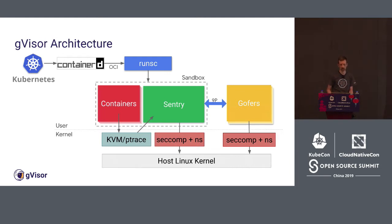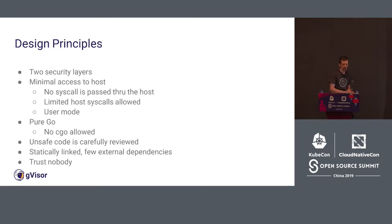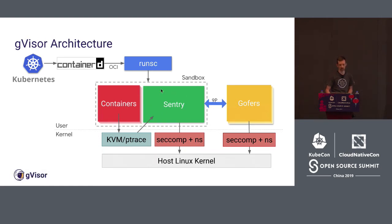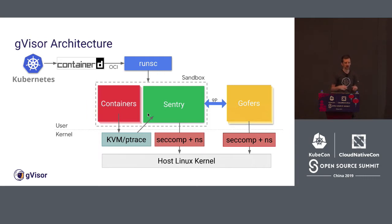Talking about some design principles behind GVisor: we have two security layers — the sentry and a seccomp sandbox — giving two layers of isolation between the application and Linux kernel syscalls. For file operations, we go through a separate application called the gofer. If you want to open an arbitrary file, you'd need to break through the sentry and then find another bug in the gofer — providing two layers of isolation for file system writing.